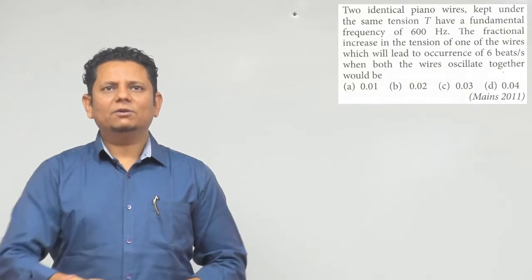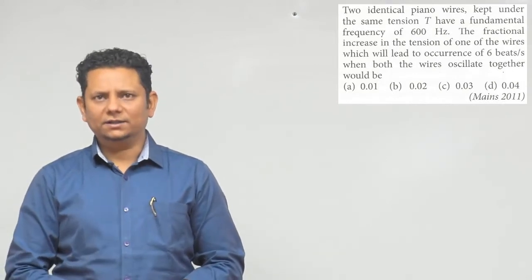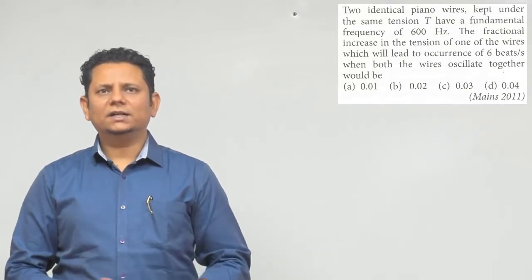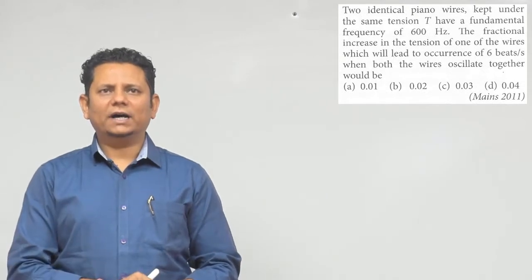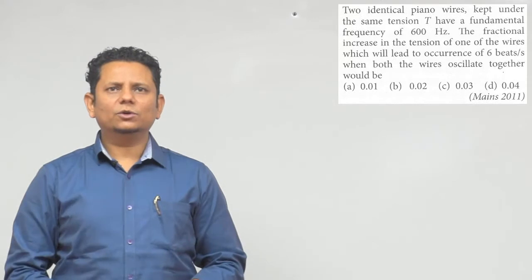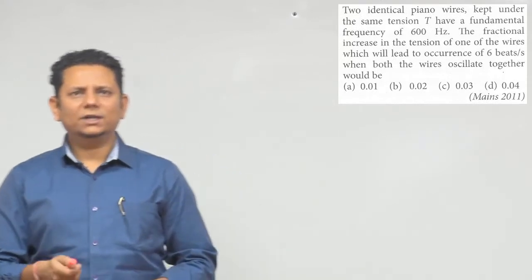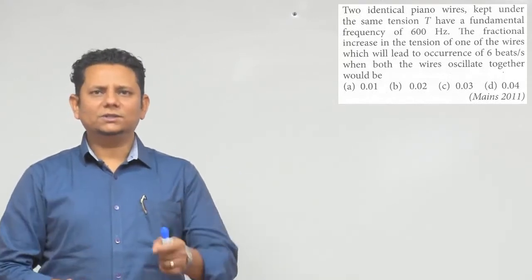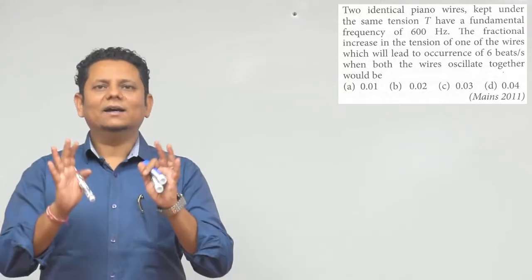The next question says: two identical piano wires kept under the same tension T have a fundamental frequency of 600 Hz. Find the fractional increase in the tension of one of the wires which will lead to occurrence of 6 beats per second when both wires oscillate together. The options are 0.01, 0.02, 0.03, and 0.04.